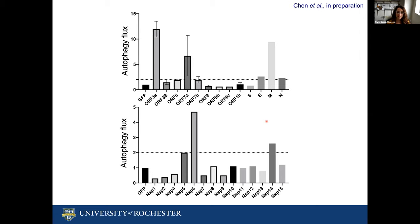We identified some candidates, such as open reading frame 3A, 7A, the structural protein M, and the non-structural proteins 6 and 14. This was very exciting because it indicates that these proteins are triggering autophagy. However, we need to take this information with caution, since these experiments were performed under conditions of transfection in the absence of the rest of the SARS-CoV-2 genome, which may also help modulate the expression of these proteins. The next step is to reconcile this information in the context of an infection.